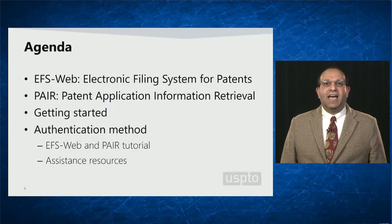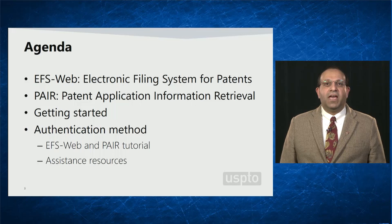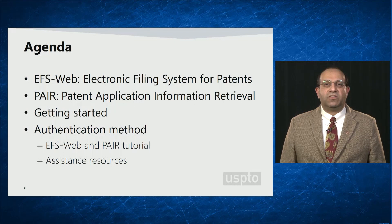The following agenda items will be covered. We will provide an overview of the EFS web system, which is the USPTO's web-based patent electronic filing system. Using EFS web, anyone with a web-enabled computer can file patent applications and documents. We will also overview the USPTO's PAIR system, which stands for Patent Application Information Retrieval.